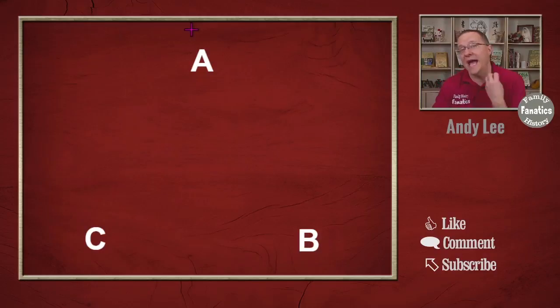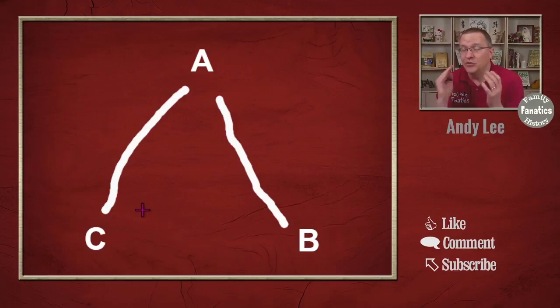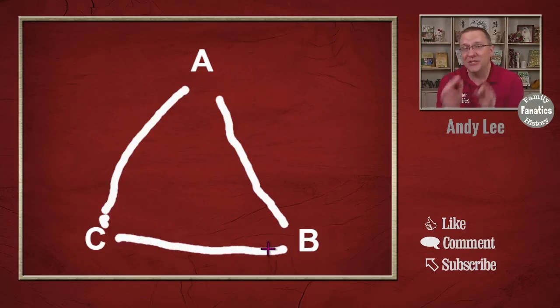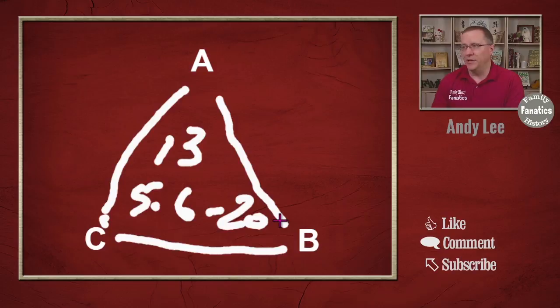To understand triangulation, we have three people, three matches here. We have person A and person A has to match person B. And person A also has to match person C. So we've got two matches that both match A. Now, to triangulate, we have to look at person B and C. And if person B and C match also, you'll notice that what we have here is we have a triangle. And this is what triangulation is. Now, this is all on the same segment. So, let's say maybe this is on chromosome number 13 from 5.6 million to 20 million. It's a specific location on a specific chromosome that these three matches triangulate on.